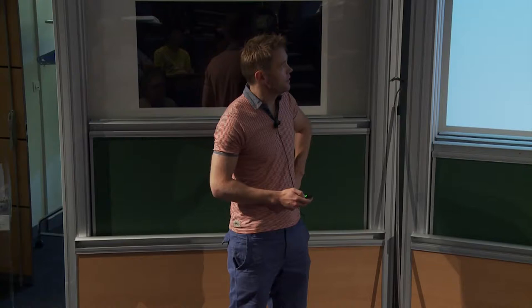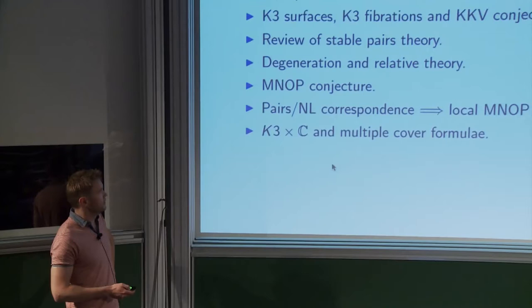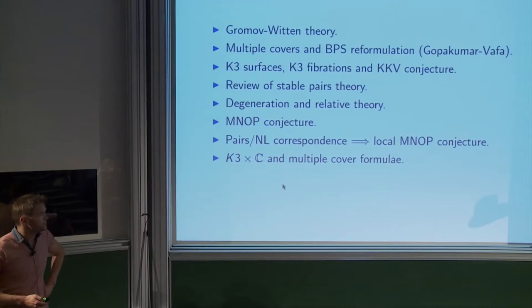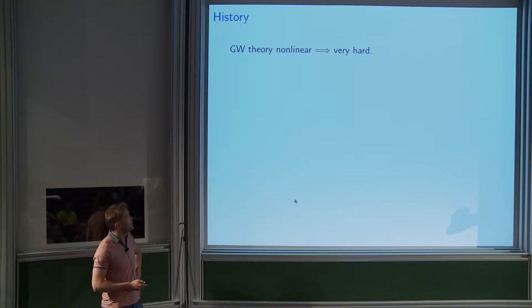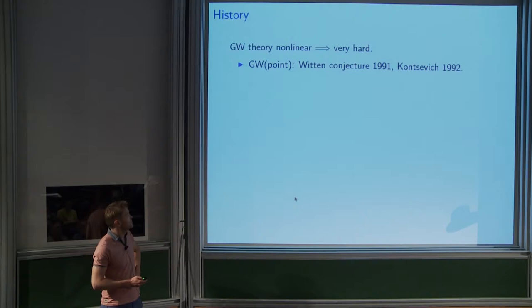The way we prove it is using a completely different theory called stable pair theory. I'll give a review of that and then explain the main tool, which is degeneration and relative theory, and the huge tool which is something called the MNOP conjecture. Gromov-Witten theory is nonlinear and so it's very hard.